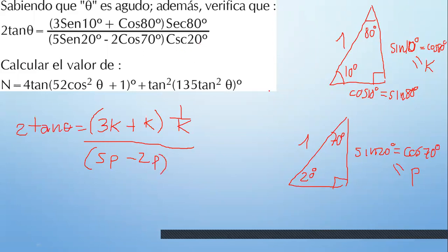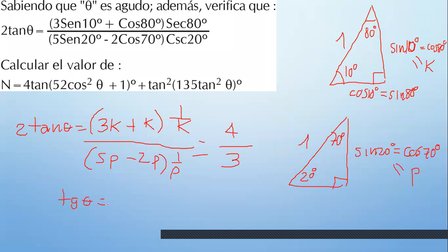¿Qué tienes abajo? 5 seno de 20: seno de 20 es P. Menos 2 coseno de 70: coseno de 70 también es P. Y el cosecante de 20 grados: cosecante es hipotenusa sobre opuesto, pero el opuesto es P, entonces 1 sobre P. Simplificas, pasas a multiplicar: arriba te quedaría 3 más 1 es 4; abajo 5 menos 2 es 3. Eso es tangente de theta por 2.